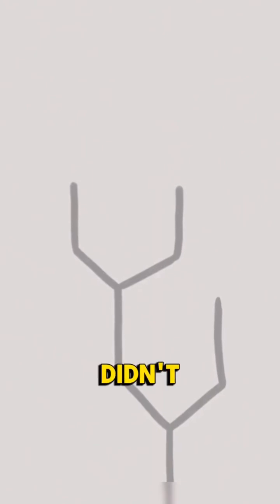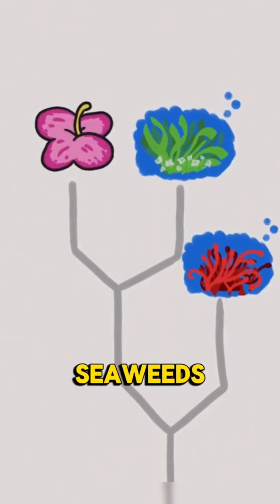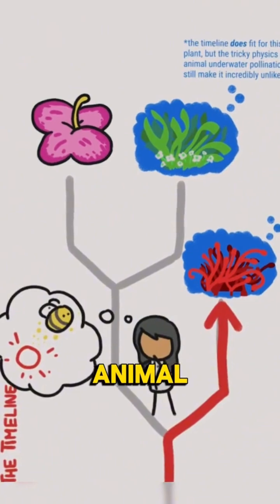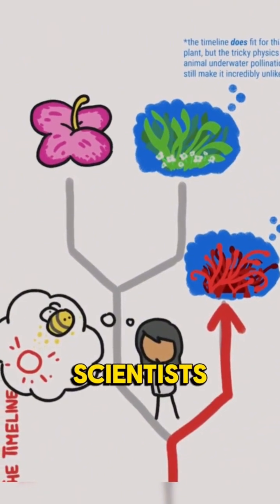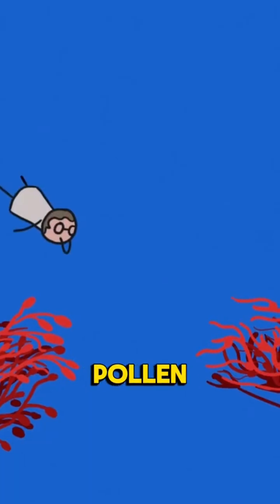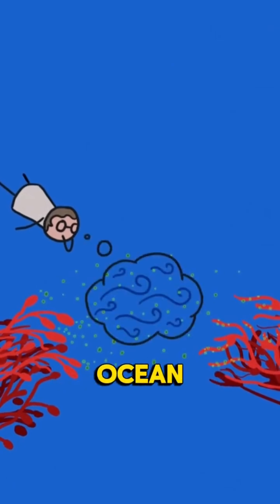Also, the timeline didn't seem to fit. Many species of aquatic plants and seaweeds existed long before animal pollination is thought to have evolved, so scientists assumed that the only way pollen moved around underwater was via the motion of the ocean itself.